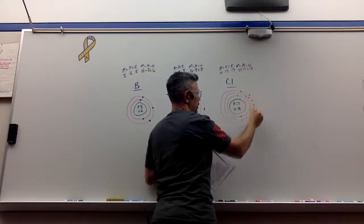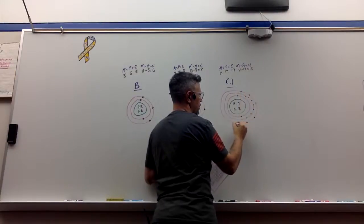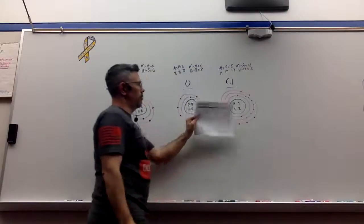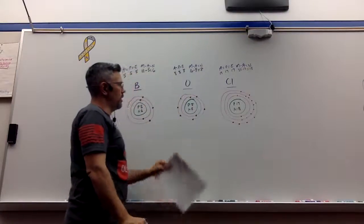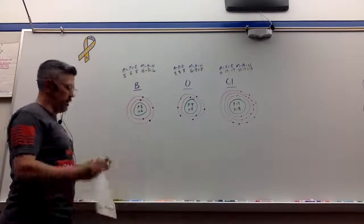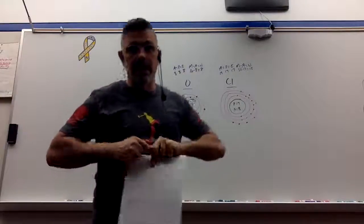One, two, three, four, five, six, and seven. That's the Bohr diagram for chlorine, for oxygen, and boron. Hope that helped, guys. See you next time.